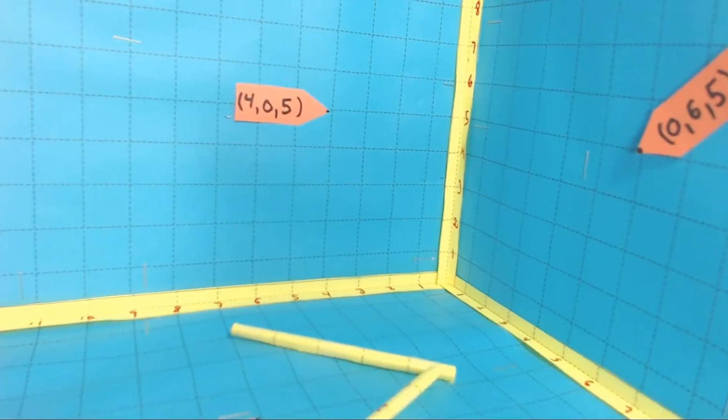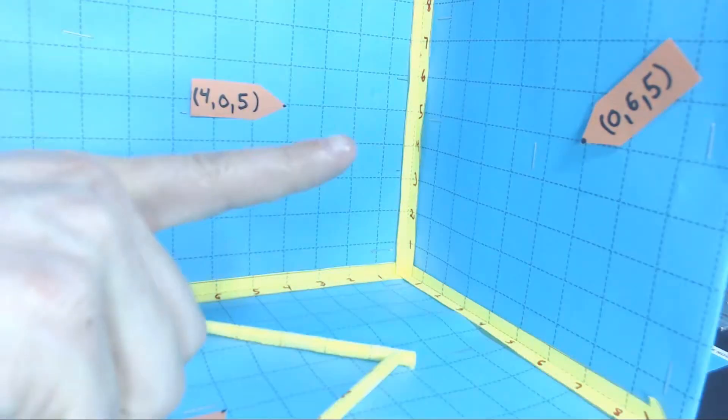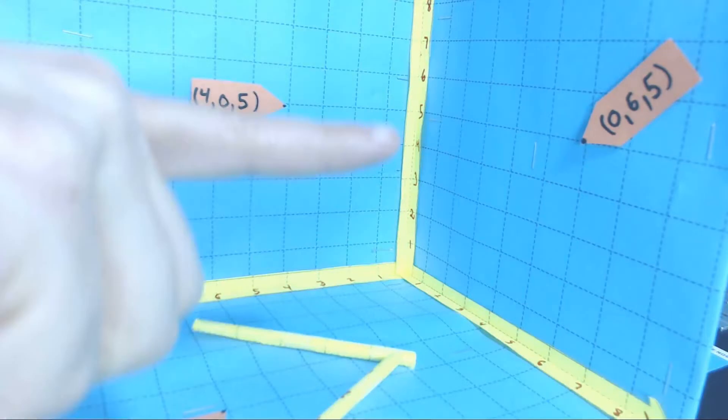So now let's continue by locating points in general three-dimensional space, like for example where my fingertip is located. That is, as you can see, three-dimensional space.